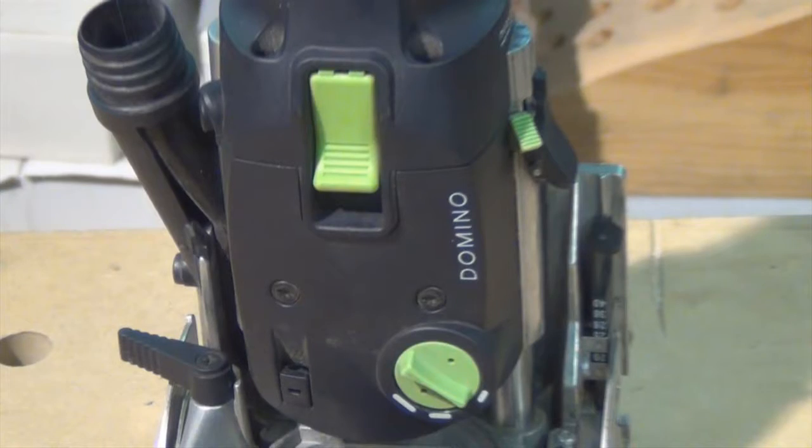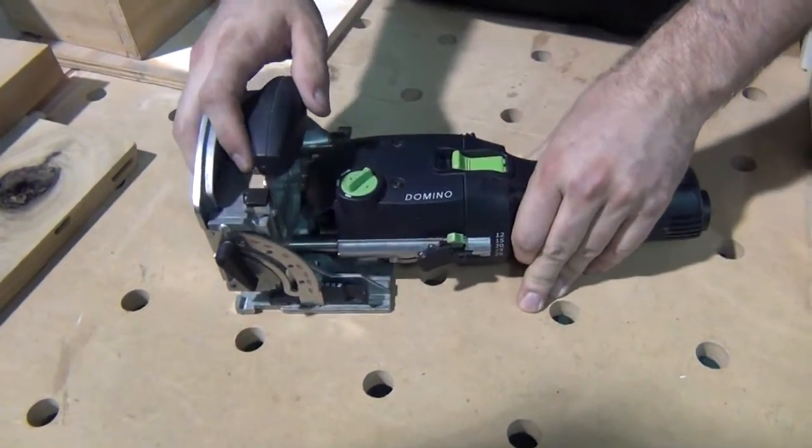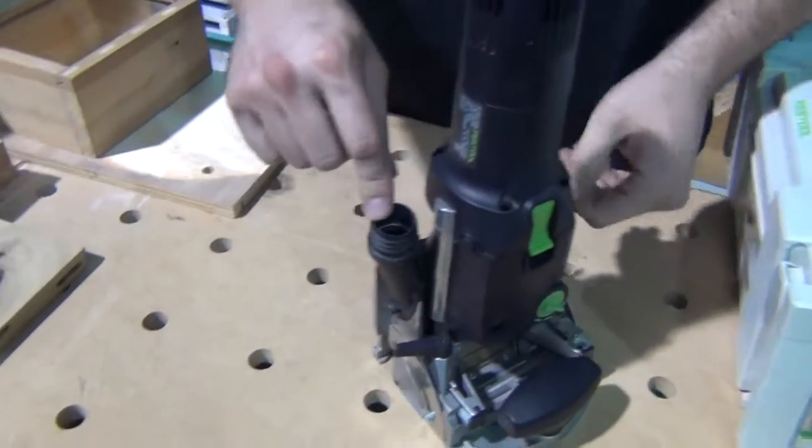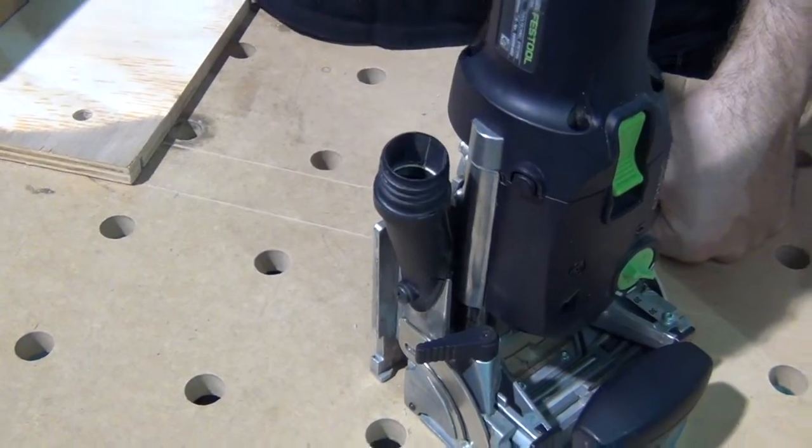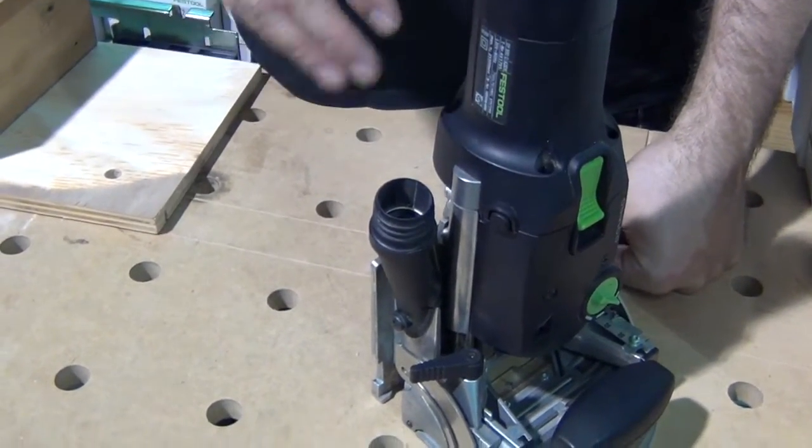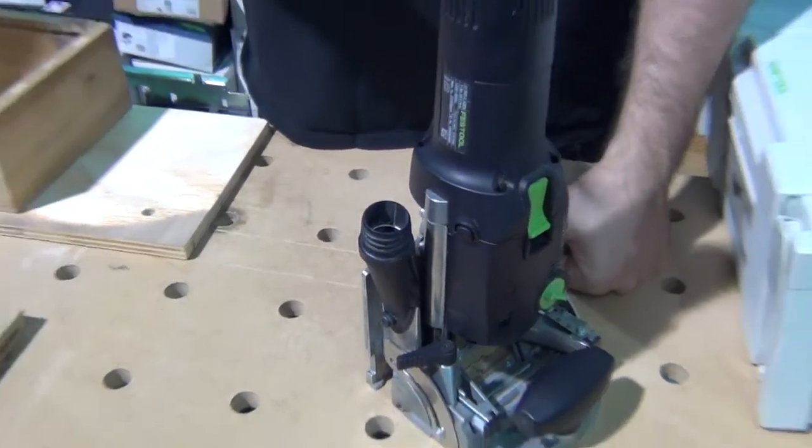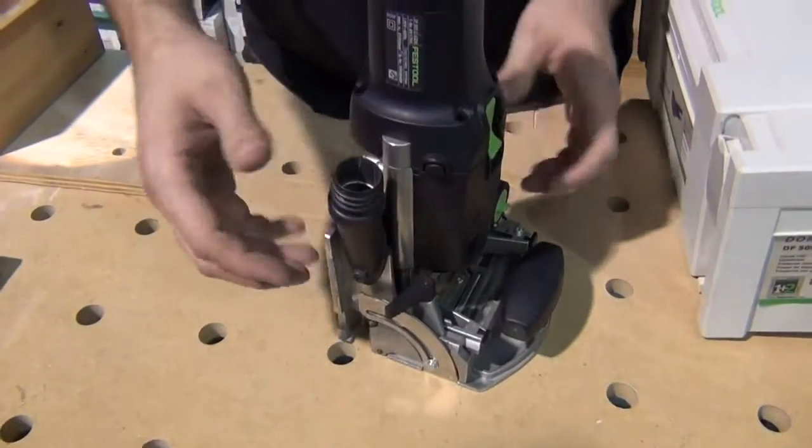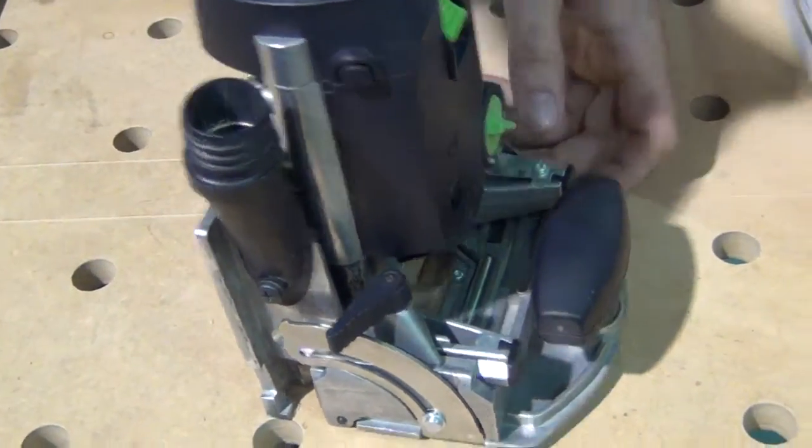So now we're going to kind of go over the basic parts of the domino real quick. So dust port, of course, with Festool, the domino is one that they really, really recommend that you have a dust collector and they say you have to. Now you can do it without, but it won't be good for the machine, the joint won't be as good and you're going to have to blow out every one, it really, really sucks.